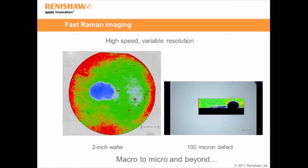If you want to, we can do a survey scan — we can scan this 2-inch wafer at a slightly lower resolution, and then zoom in to an area of interest and do it at a much higher resolution to get more and more information. This is one of the really big benefits of fast Raman imaging: we're not limited in any way to the size and scope of the measurement.